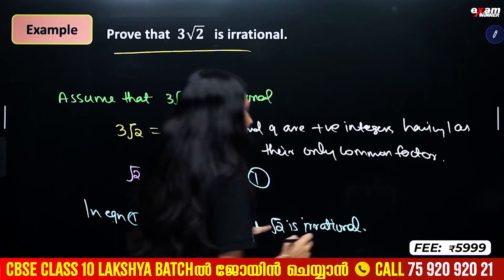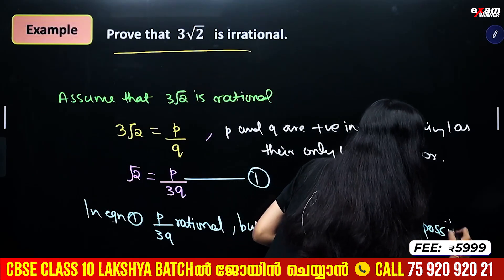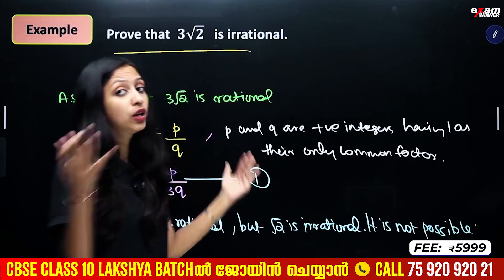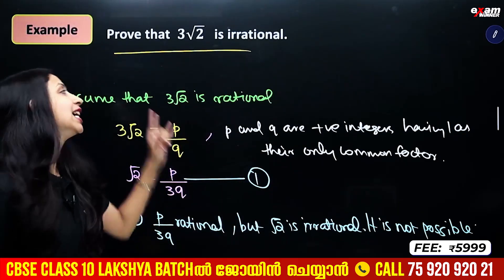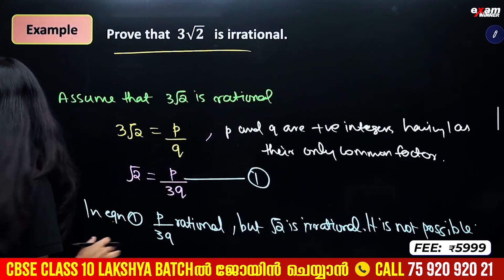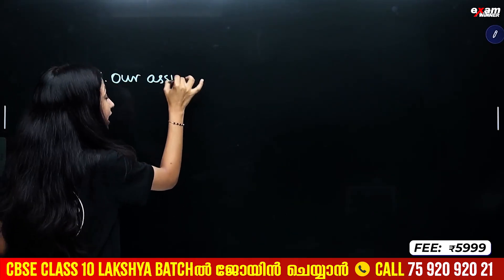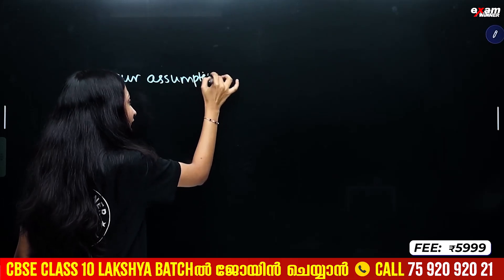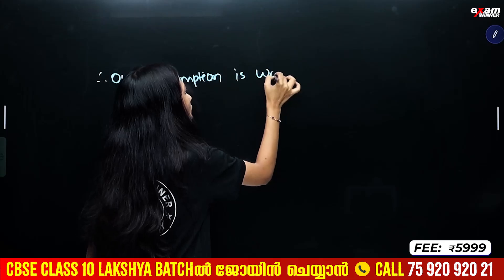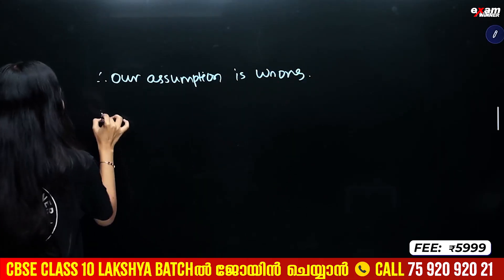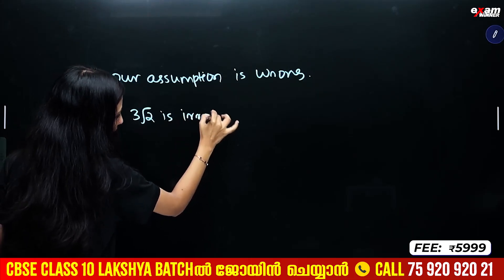Since LHS is irrational and RHS is rational, they cannot be equal. Which is not possible. Which is a contradiction. Therefore, our assumption is wrong, and 3√2 is irrational.